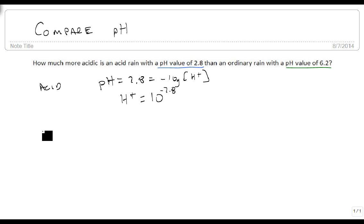Well, the ordinary rain has a pH of 6.2, so that's equal to minus the log of the H+ of ordinary rain. So H+ is equal to 10 raised to the minus 6.2. And to say how much more this is than this,